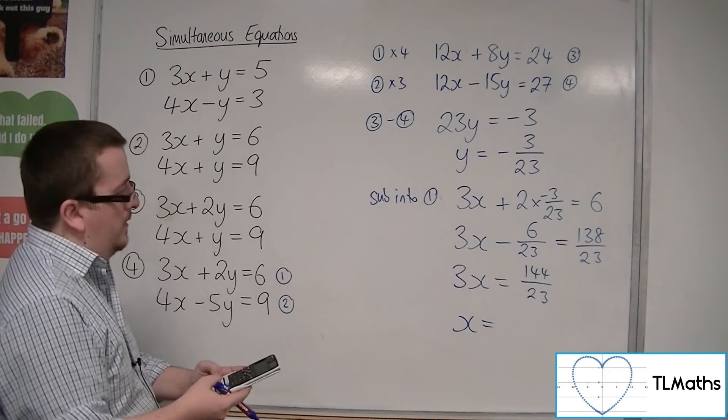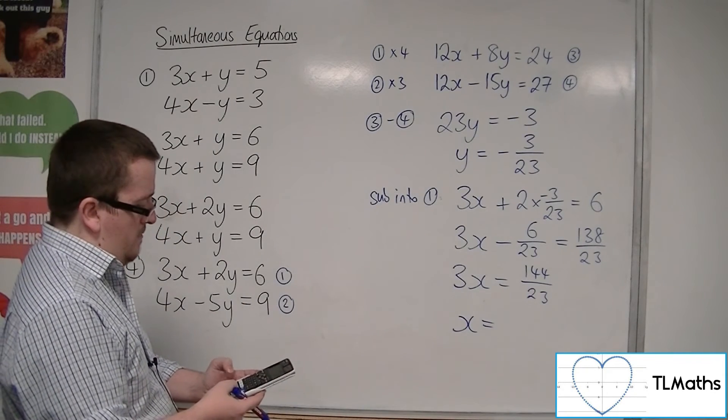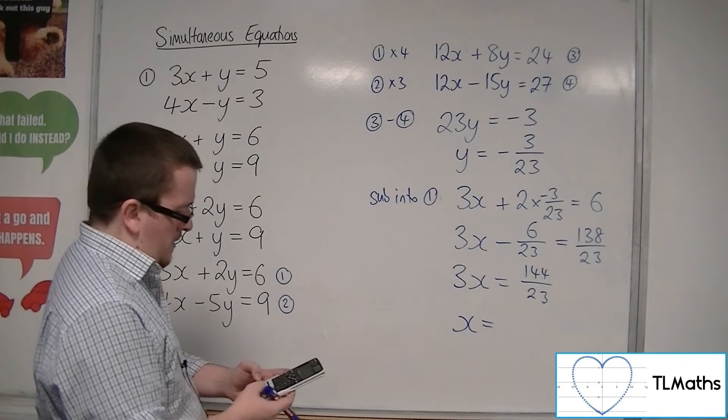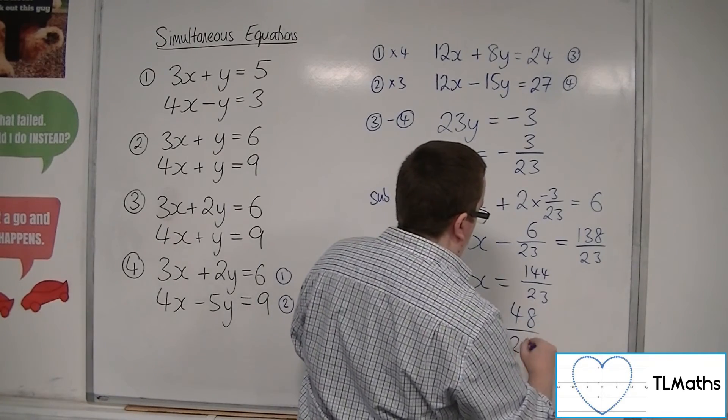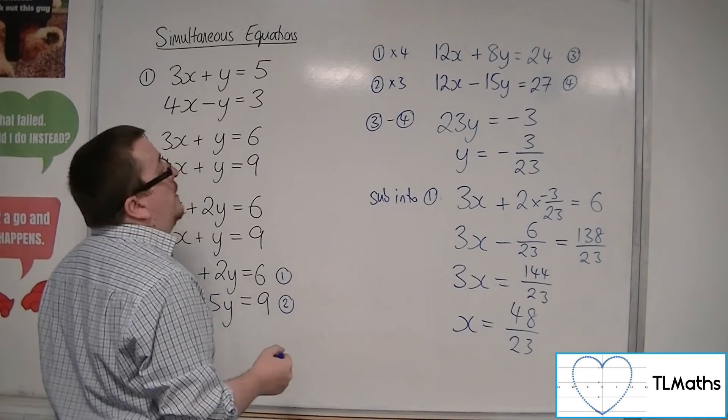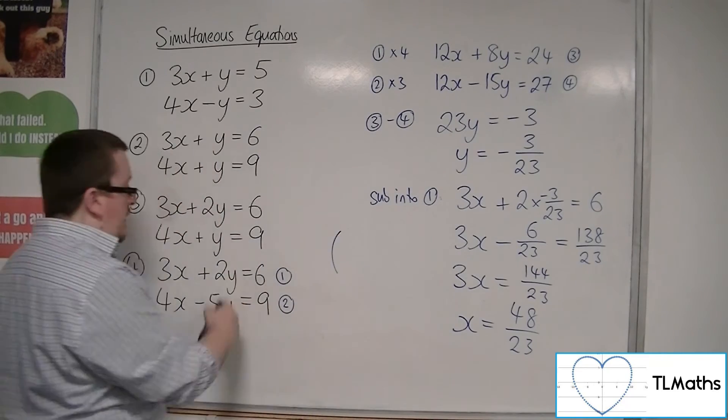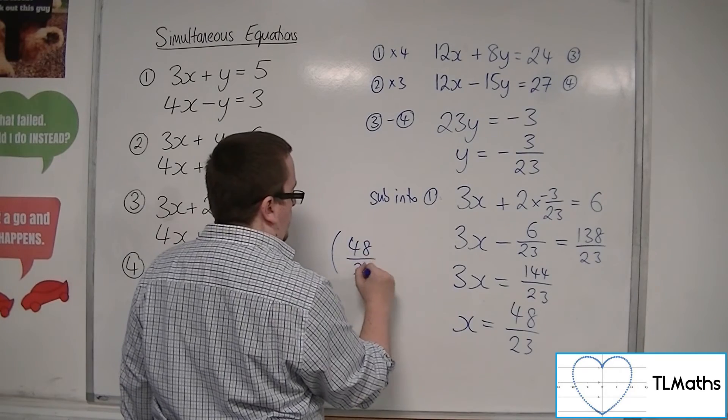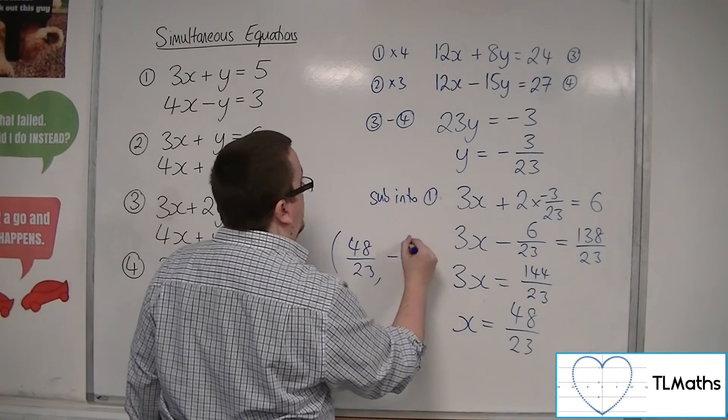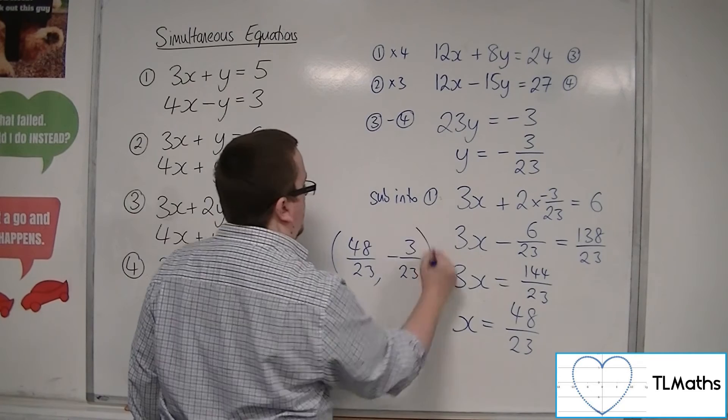So then I can add the 6 over 23 to both sides. So I'm going to get 144 over 23. And then I can divide both sides by 3. Divide by 3, 48 over 23. So these two lines will intersect at 48 over 23, the x-coordinate, and minus 3 over 23, the y-coordinate.